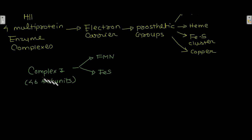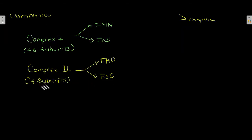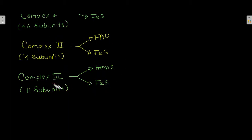Complex I, made up of 46 subunits, has FMN and FES clusters as prosthetic groups. Complex I and Complex II both have FES clusters. Complex III, made up of 11 subunits, has heme and FES clusters as its prosthetic groups.